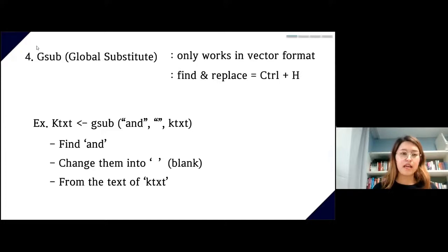Next is gsub, which stands for global substitute. It does exactly the identical job as Control+H in Excel or Microsoft Word, when you find certain words and replace them with other words. Gsub only works with vectors. In this case, I used gsub to find the word 'and' and change it to blank, which basically deletes it from the text.